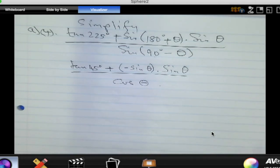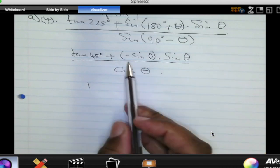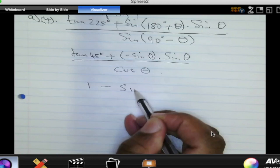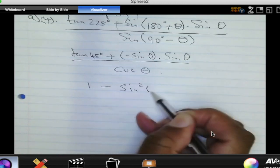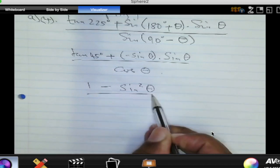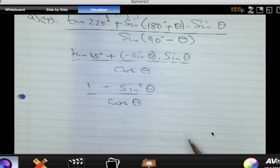Then we can simplify. Tan 45, we all know, is 1, right? So tan 45 is 1. So this is 1. Multiply negative sine theta by sine theta. Minus sine squared of theta. Right. And all that is divided by cosine of theta.